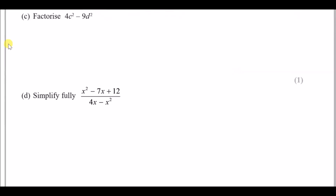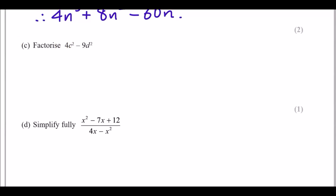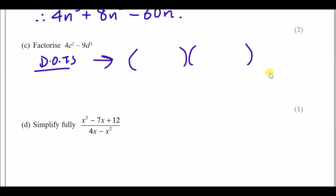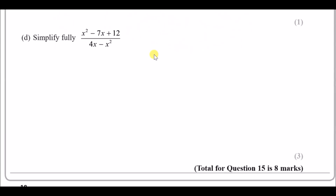For 15c: factorise 4c² - 9d². You have to spot that there's nothing in common between c and d, or between 4 and 9, but both terms are perfect squares — 4 is a square number, c is squared, 9 is a square number, d is squared. So we use the difference of two squares method, which lets us factorise into double brackets. Square root each term: √(4c²) = 2c and √(9d²) = 3d, then put plus and minus, giving (2c + 3d)(2c - 3d).